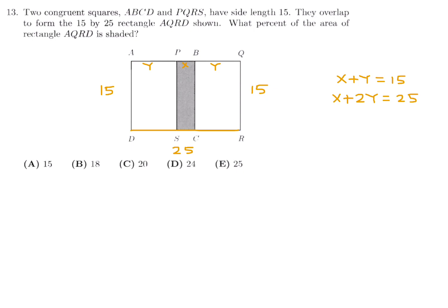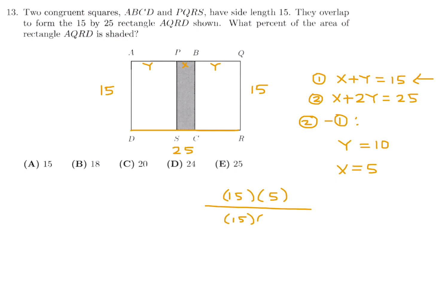Subtracting the first equation from the second gives Y = 10, then substituting back gives X = 5. The shaded region has dimensions 15×5 and the rectangle is 15×25, so the fraction is 5/25 = 1/5 = 20%. Number 13, answer C.